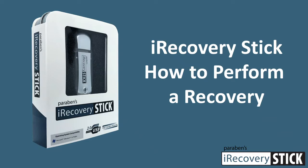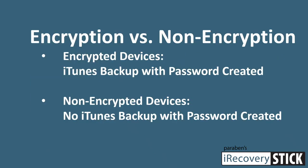The specific way that we get more data is if the device is encrypted. Encrypted devices are devices that have been backed up using iTunes and using a password during that backup process. Once you do this, both the iTunes backup and the phone itself become encrypted. If you don't have an iTunes backup with a password, then the device is not encrypted, and neither is any backup file created without a password.